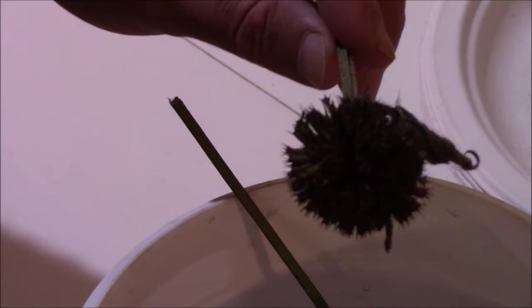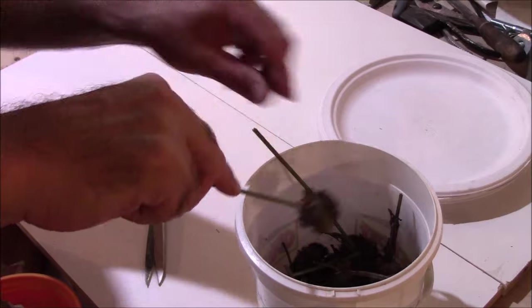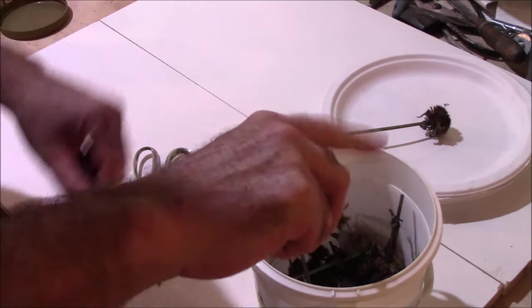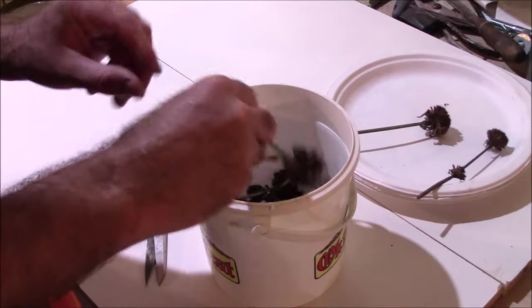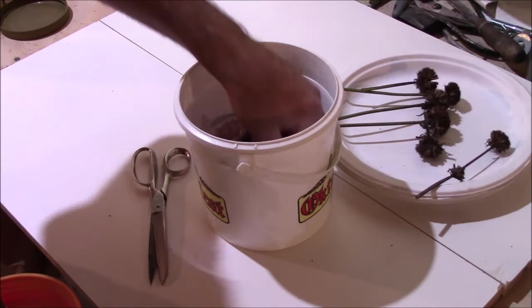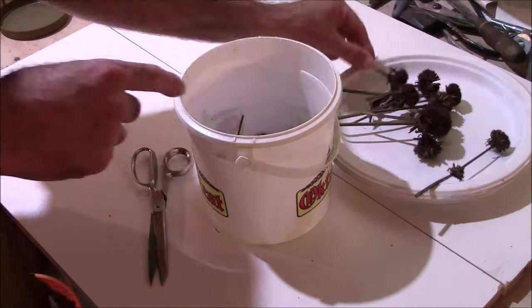The seeds will tumble out of the seed heads on this when you go to collect them. That's why you have to be so careful when you clip them. All you need to do really is tap them into a bucket, or if you have them in a paper bag you can shake them - the seed just tumbles right out.